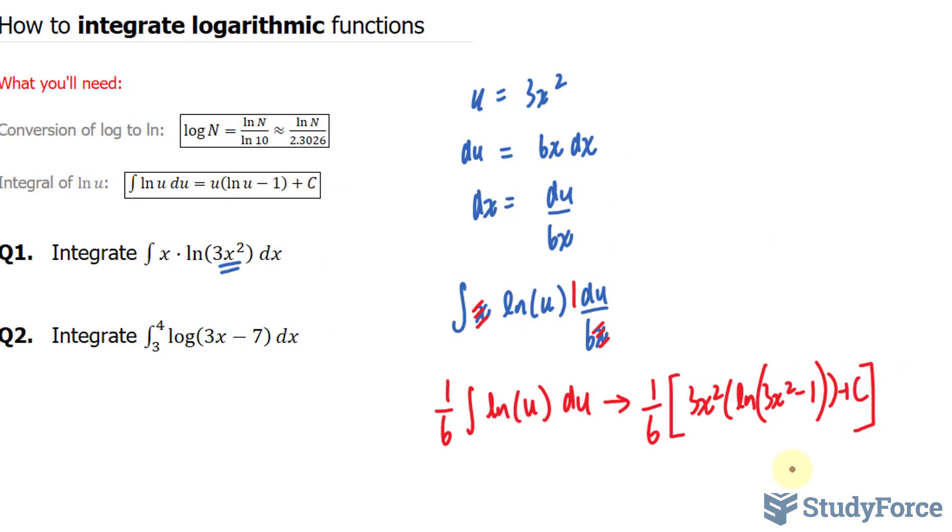Now, before we conclude, this 3 can cancel out with this 6, where this becomes half, and this represents the answer to question number 1. Let's move on to question 2.